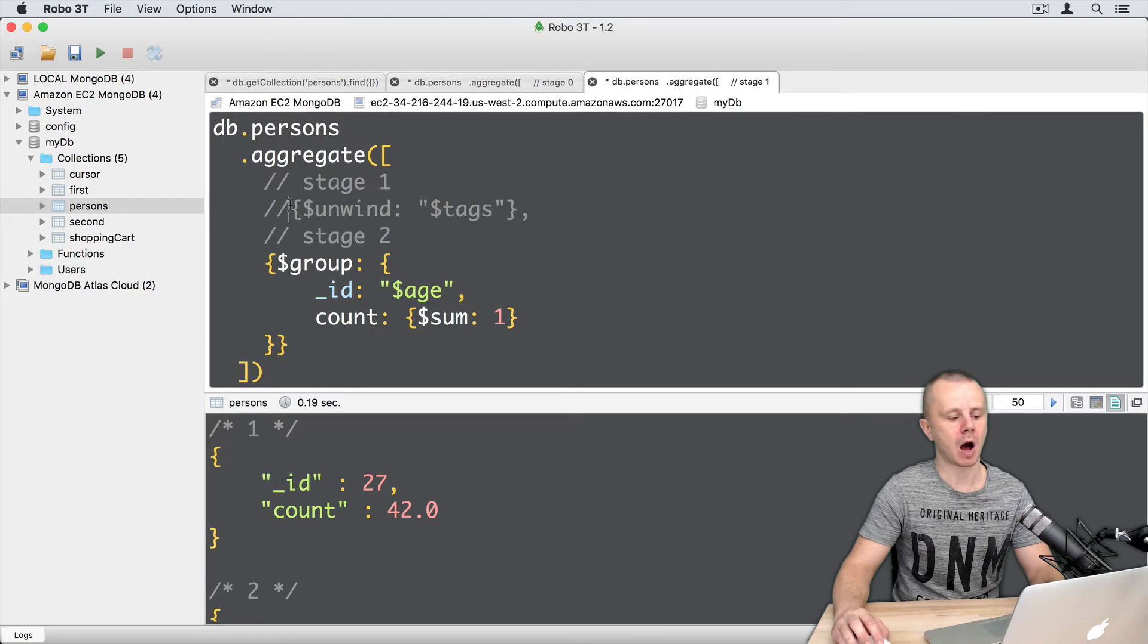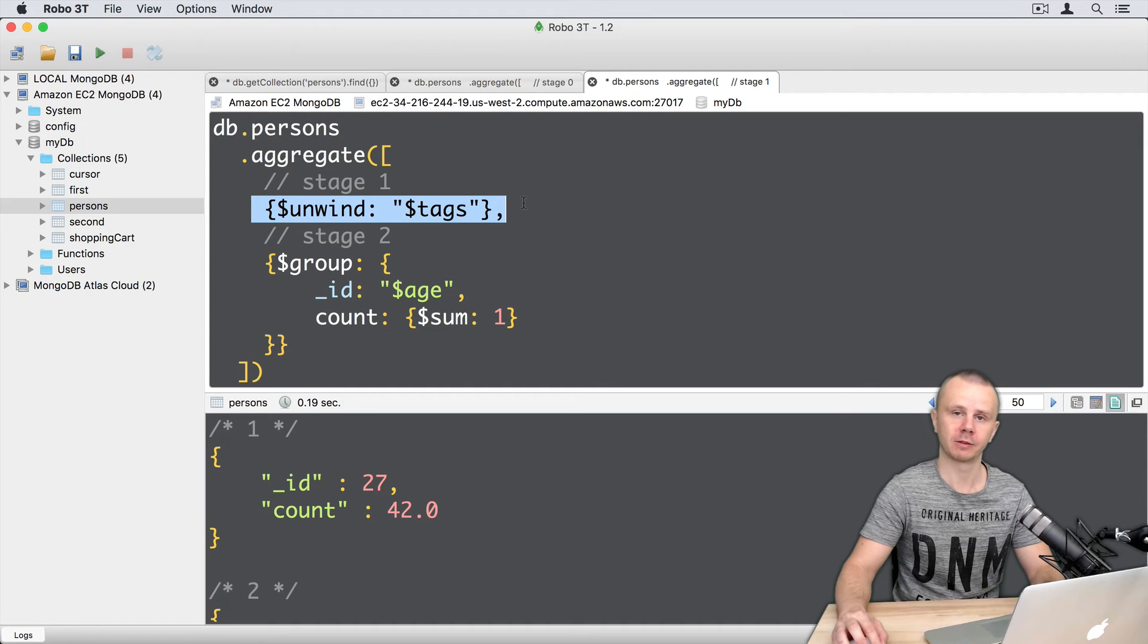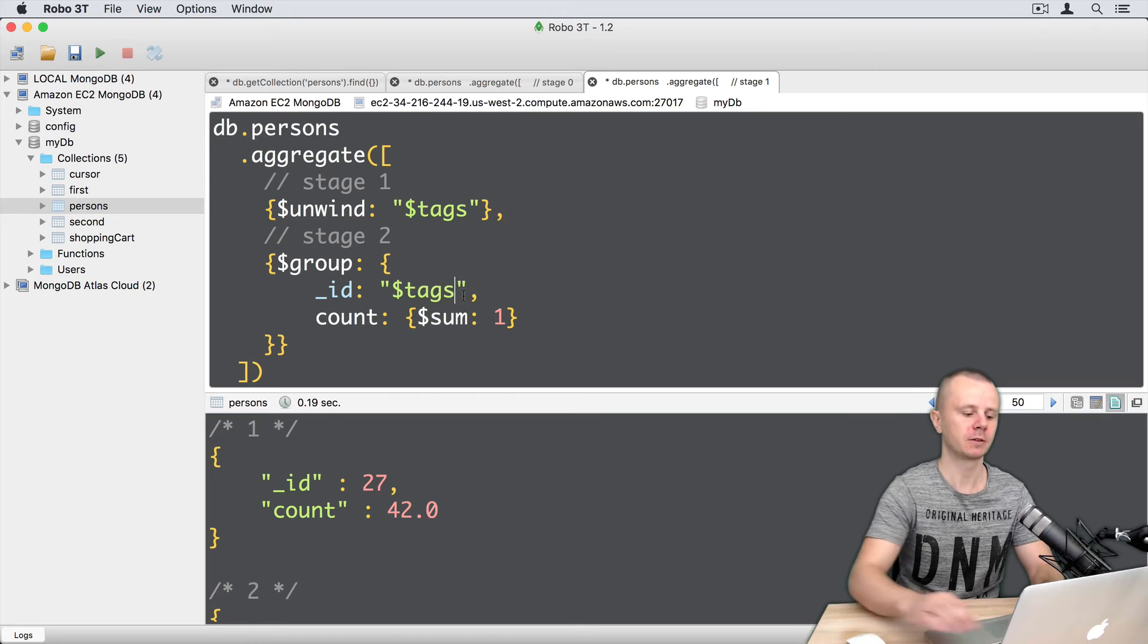We already have the unwind stage here, let's just uncomment it. We will unwind by the tags field, it is an array in our example, and let's group by the same tags field.